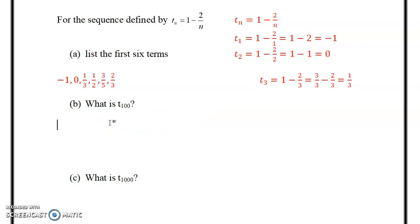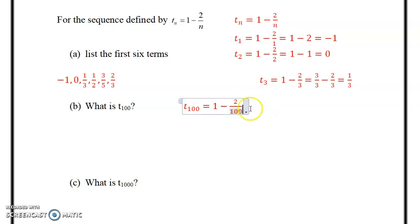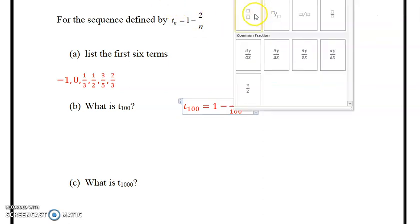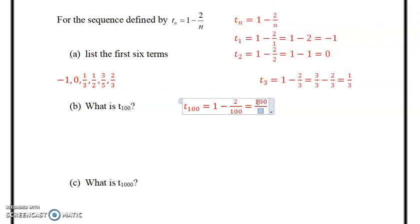So those are the first six terms in the sequence given there using the formula. Next, it says what is the 100th term? So we're going to put in 100 here.